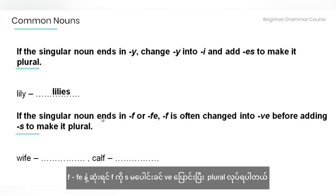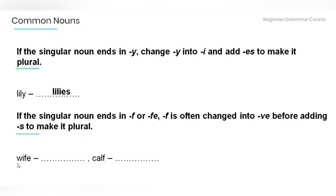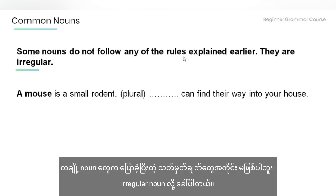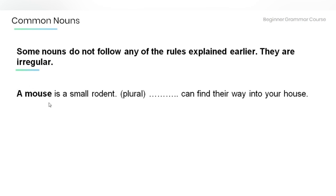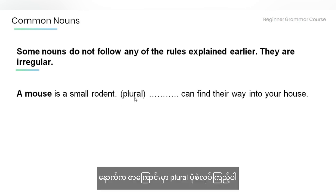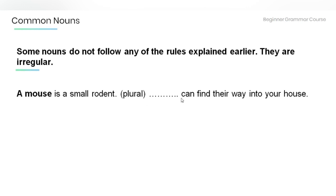If the singular noun ends in F or FE, F is often changed into VE before adding S to make a plural. Try with the word wife. Some nouns do not follow any of the rules — they are irregular. For example, a mouse is a small rodent. The plural is mice.